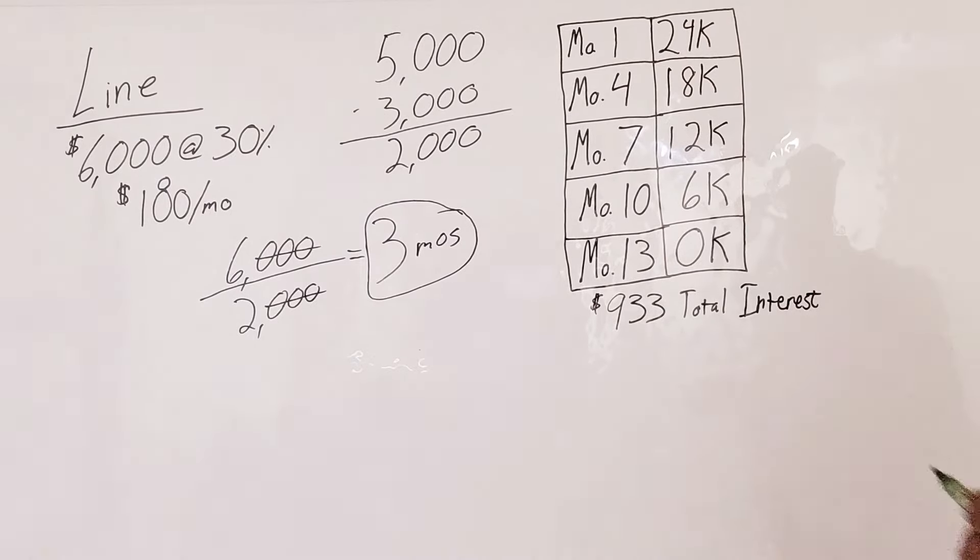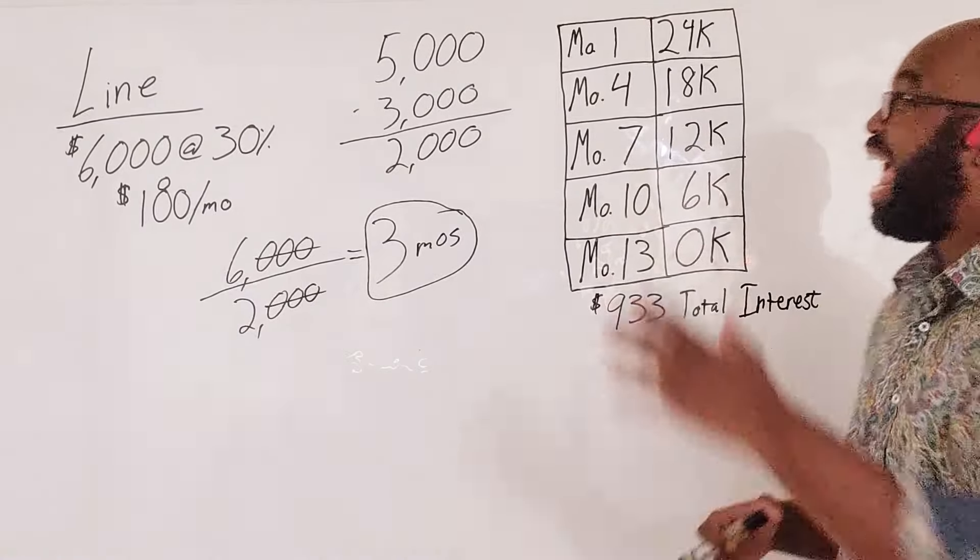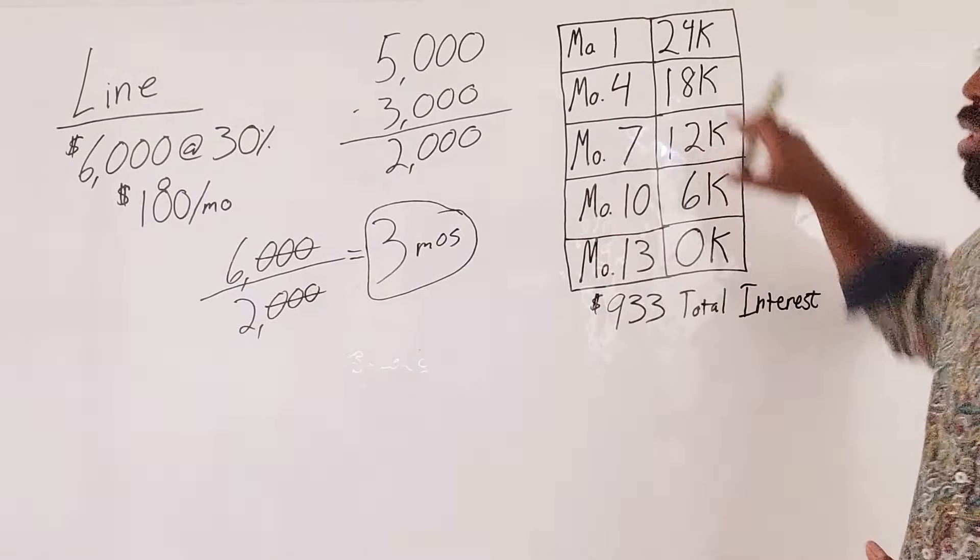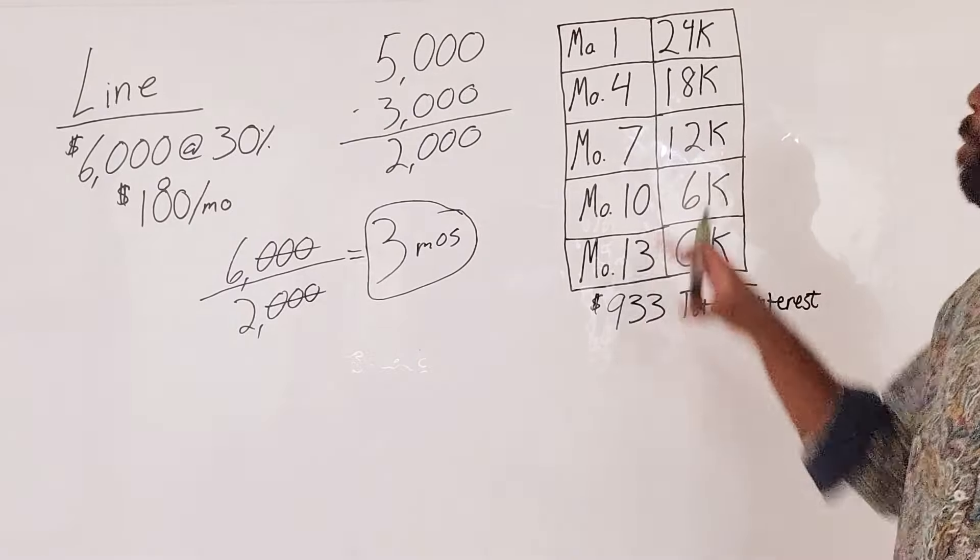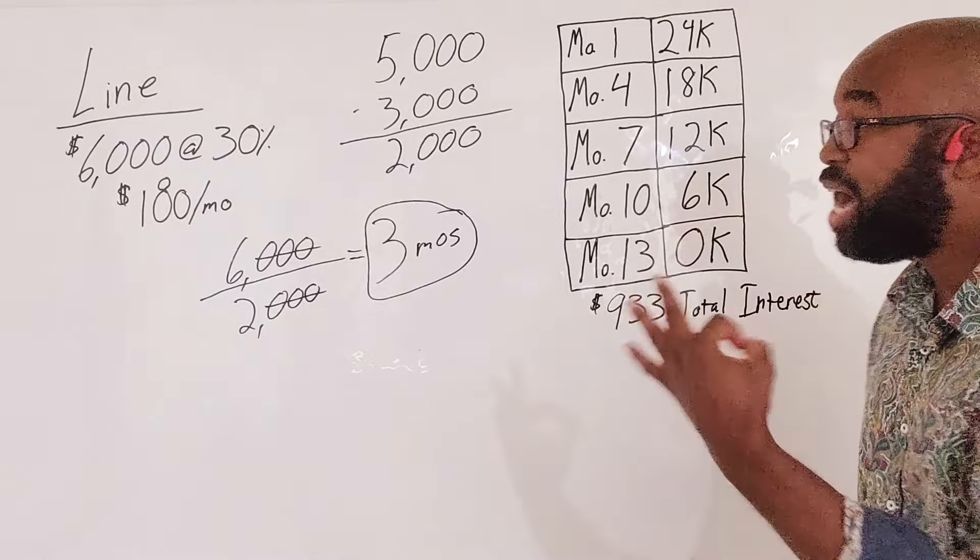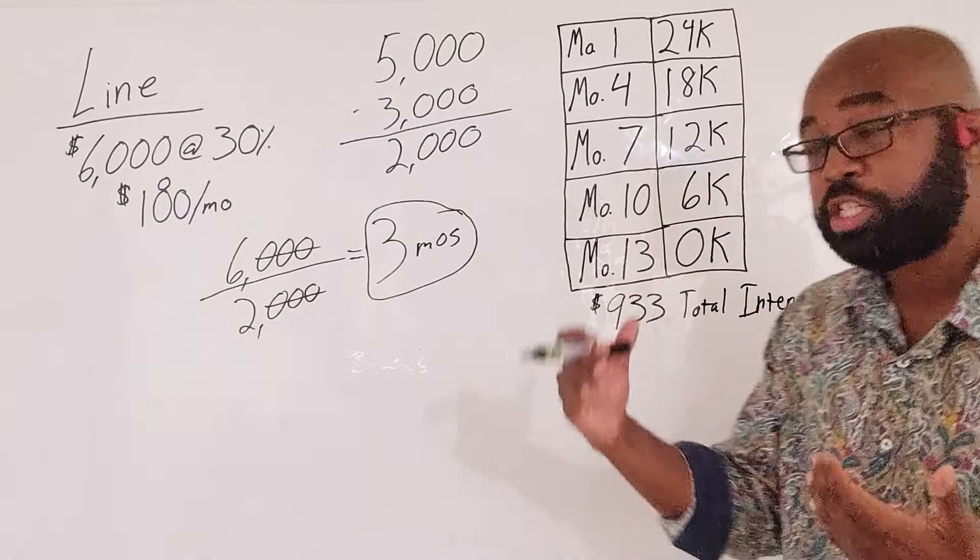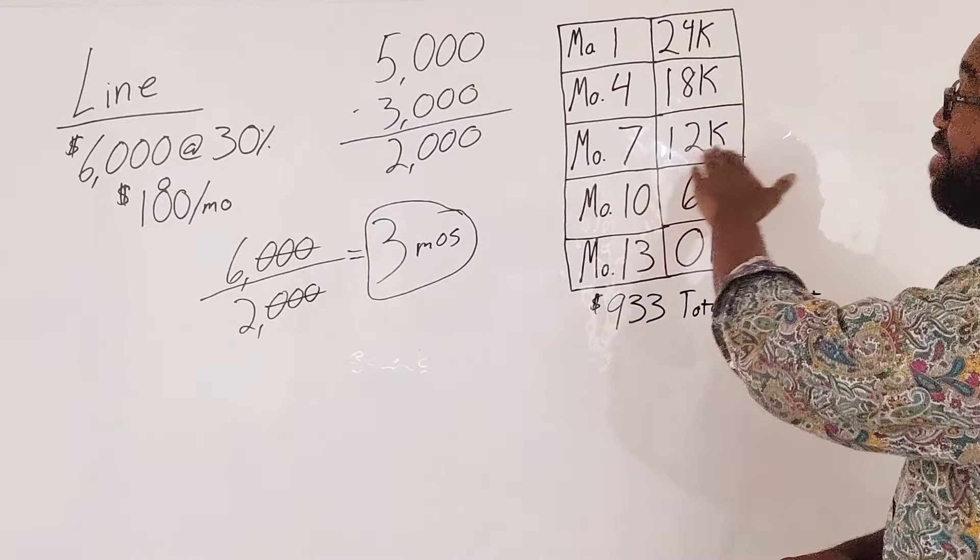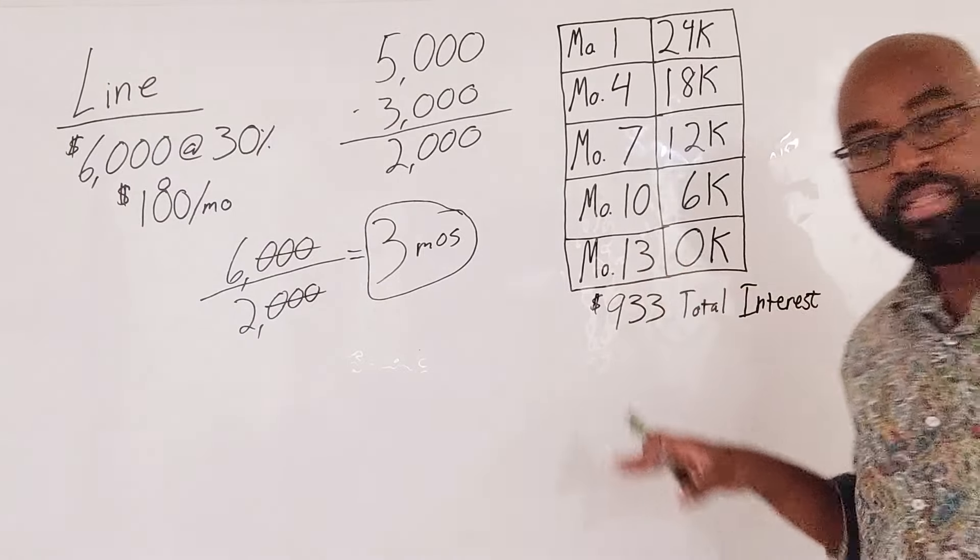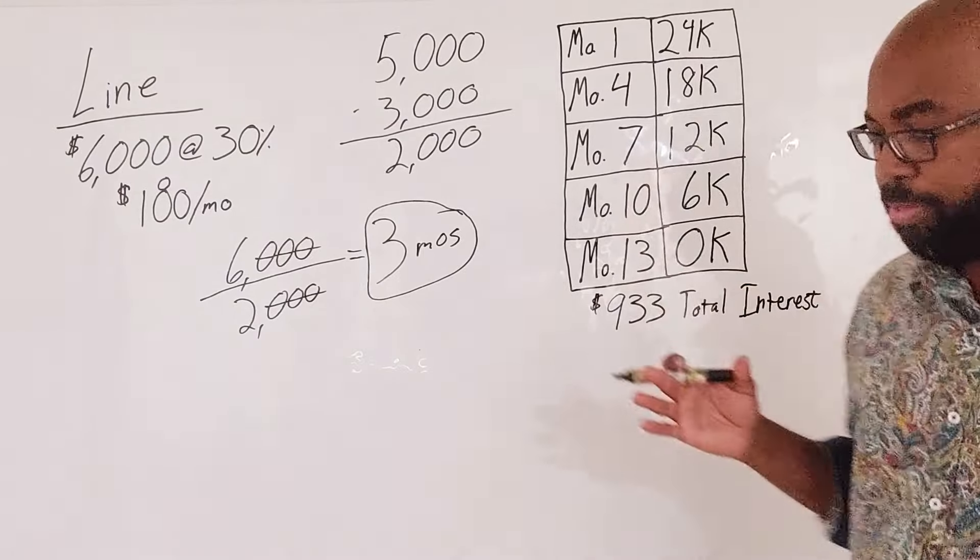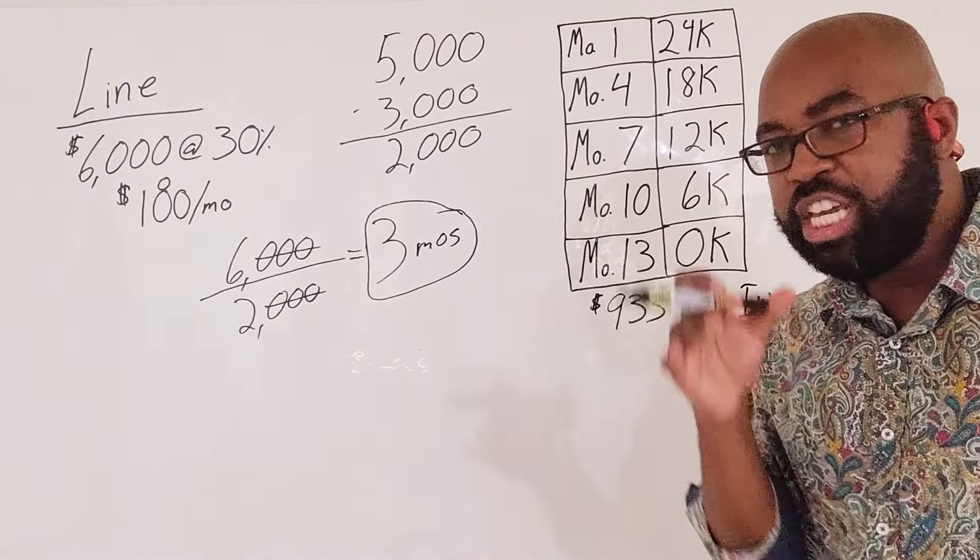Month one, 24K. Remember you're replenishing and then deploying. After the fourth month, you deploy it again. Now you're down to 18K. Month seven, because remember, it's going to take us three months to get rid of that $6,000 that we just deployed. Month seven at 12K. Month 10, 6K. Month 13, zero K. You're out of there in 13 months. That's just one year and one month.